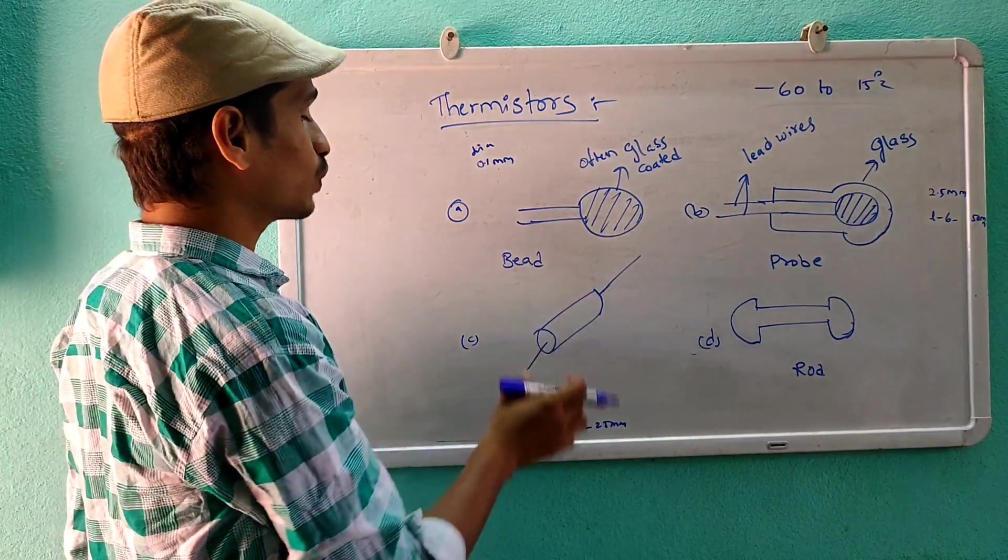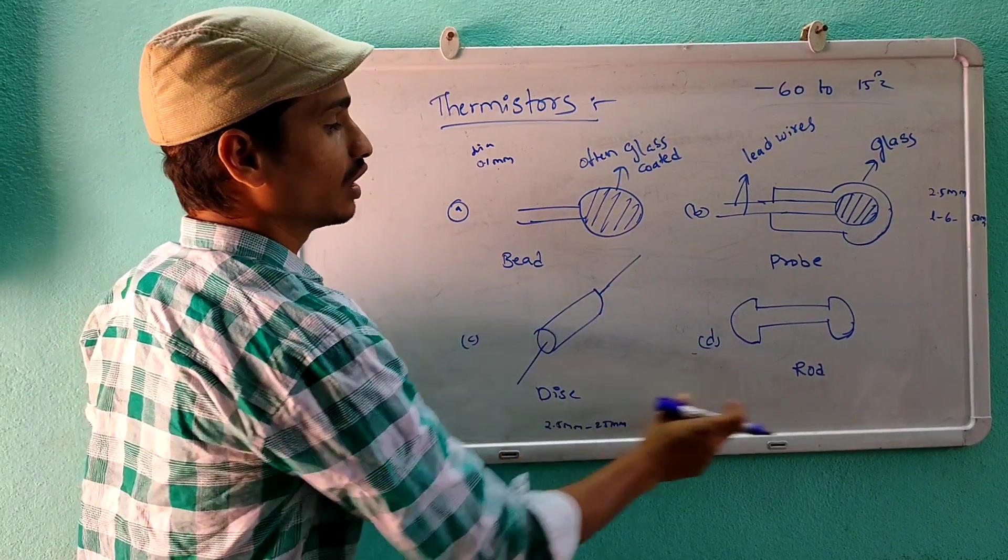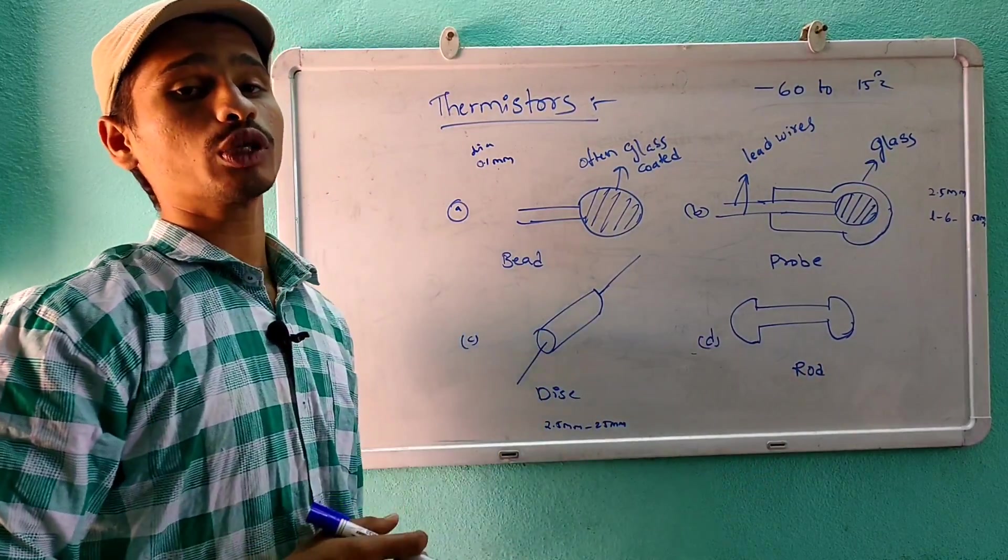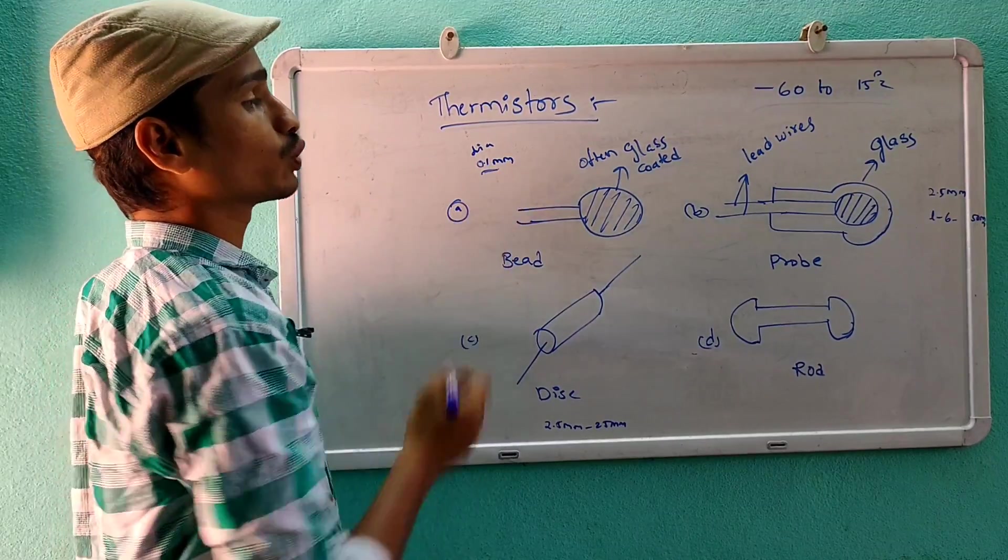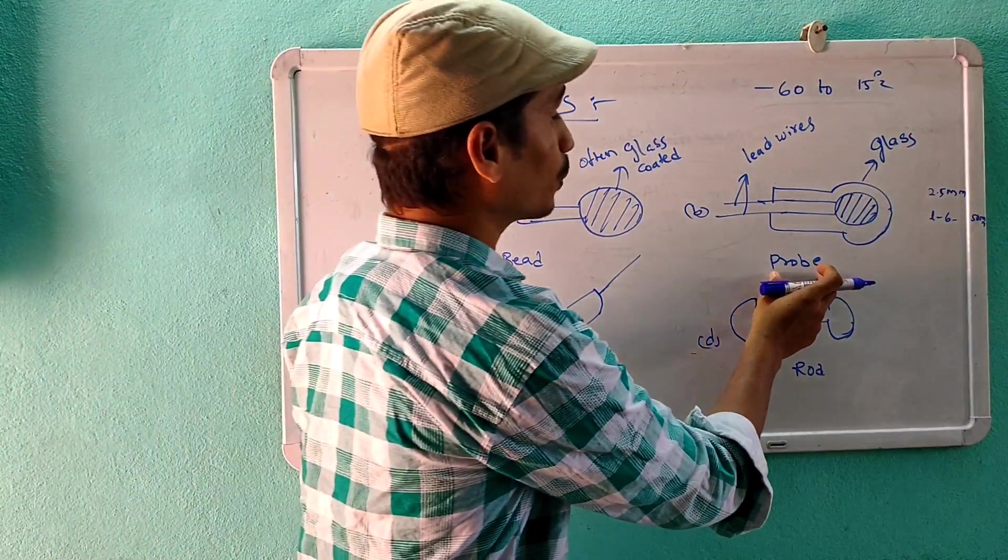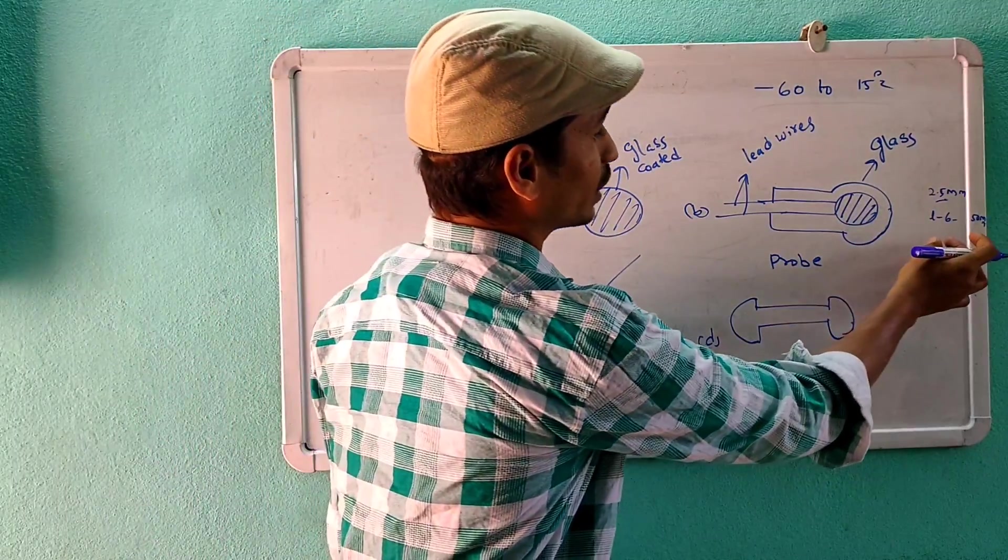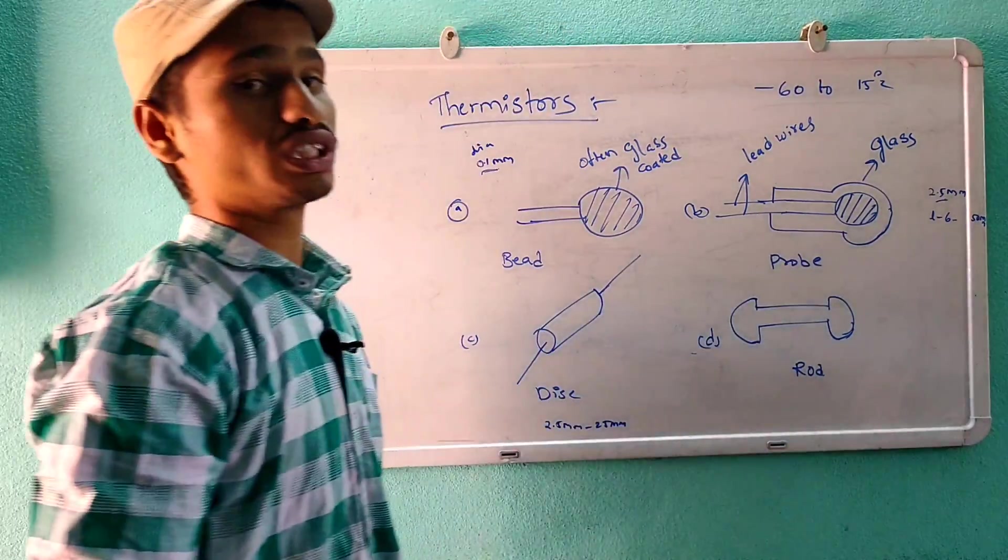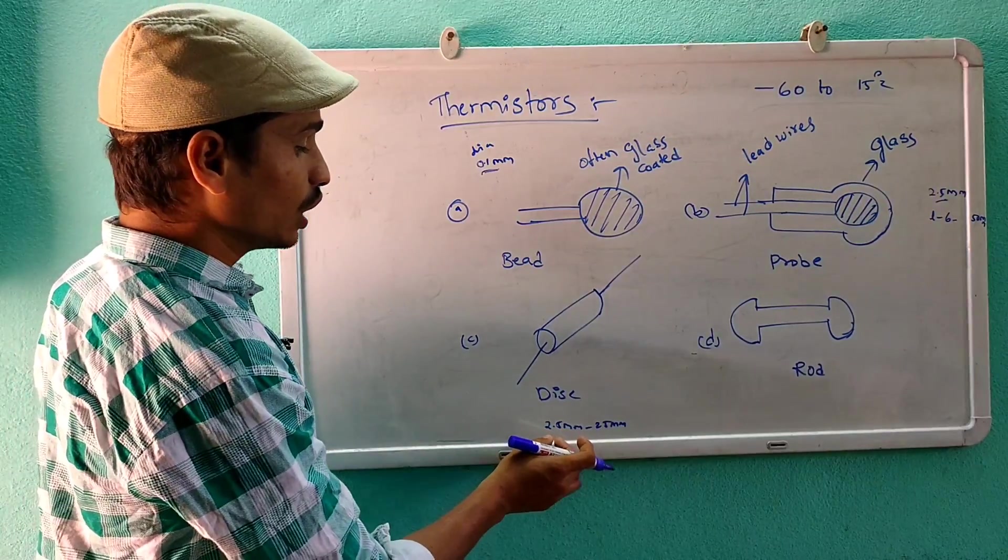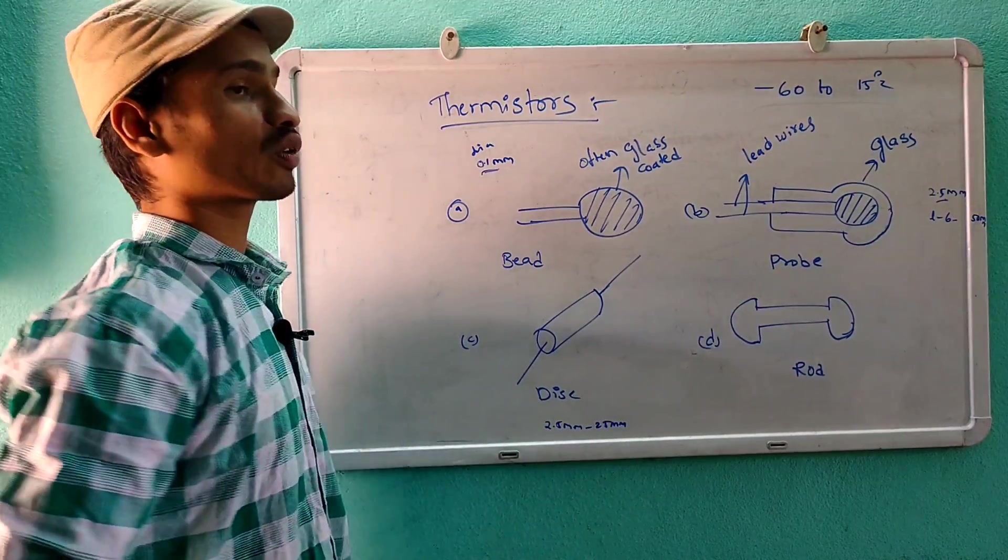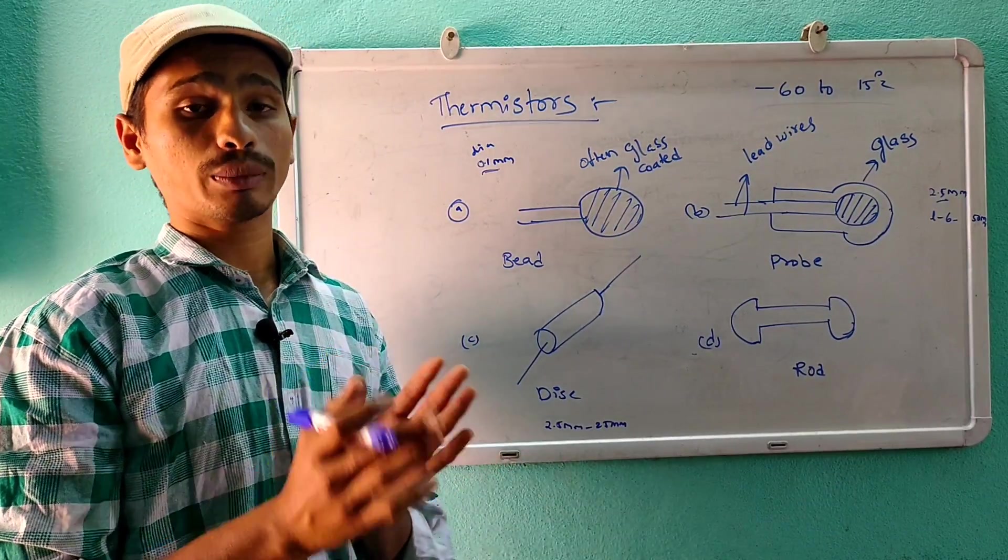Thermistors are available in different forms like bead, probe, and disk. The bead type has a diameter of 0.1 mm. The probe type has a diameter of 2.5 mm and length of 6 to 50 mm. This is about thermistor, which is used to measure low temperature.